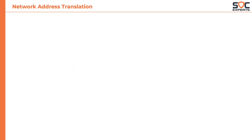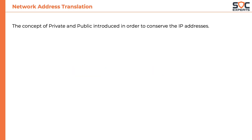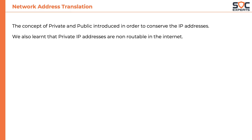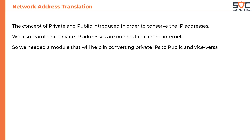In order to conserve IP addresses, the industry introduced private IP addressing. Private IP addresses are not routable on the internet, so there was a need for a technology that helps in converting a public IP address into a private IP address and vice versa. That's why network address translation was introduced. NAT helps in converting private IP addresses into public IP addresses and vice versa.